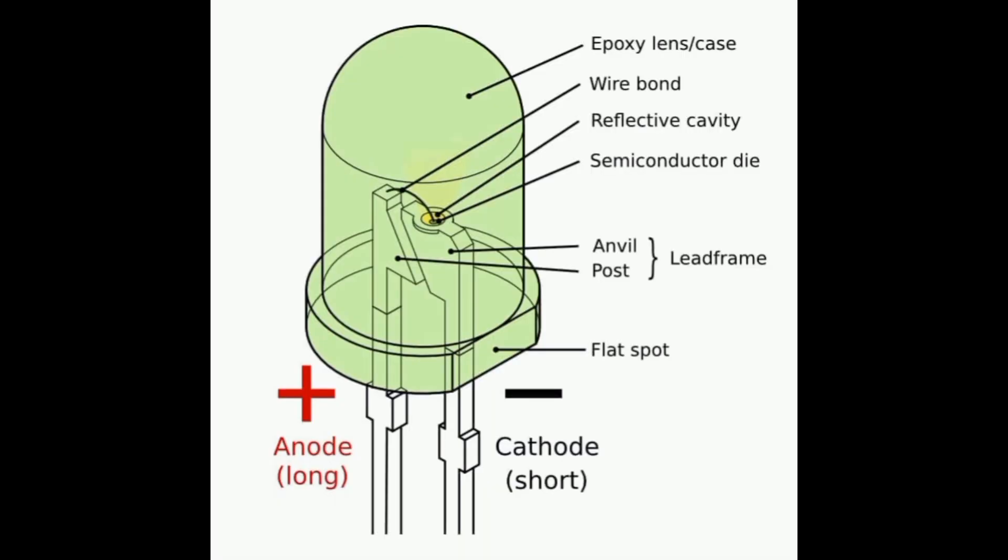This is LED and its parts contain epoxy lens or case. This epoxy lens or case protects the delicate internal components of the LED from environmental factors such as moisture, dust, and physical damage. It also helps to focus and direct the light emitted by the LED.